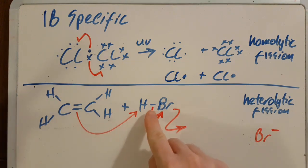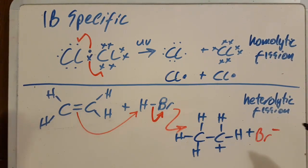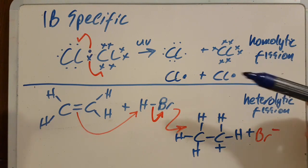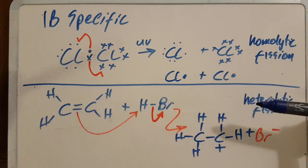So this here is heterolytic fission because the electron pair is not split in the same direction, in the same way. It just goes over to one side. And if you recall, this is the electrophilic addition of a hydrogen halide to an alkene.